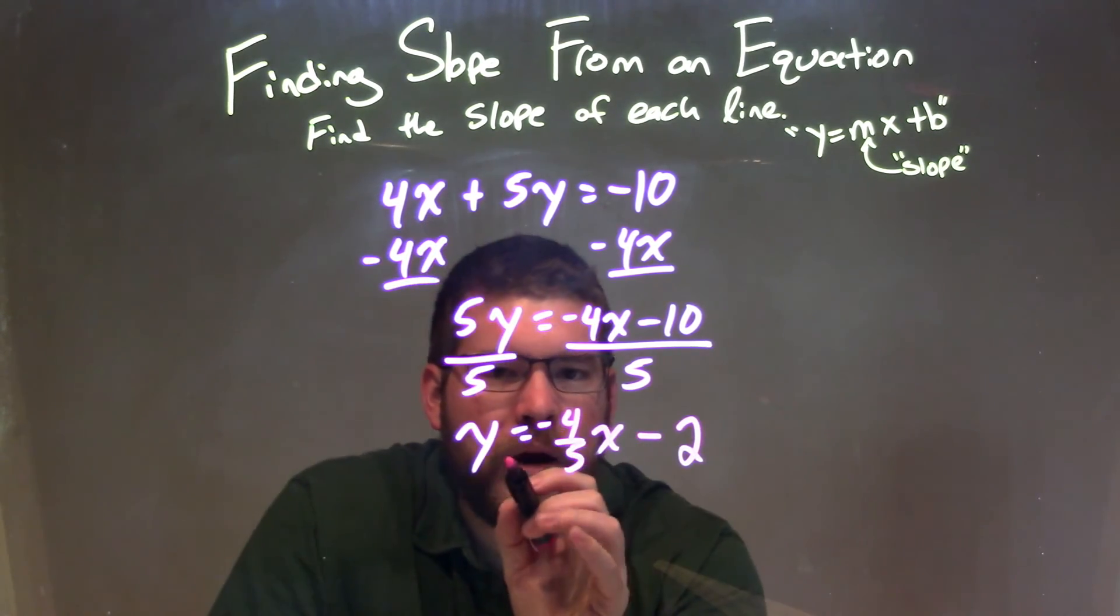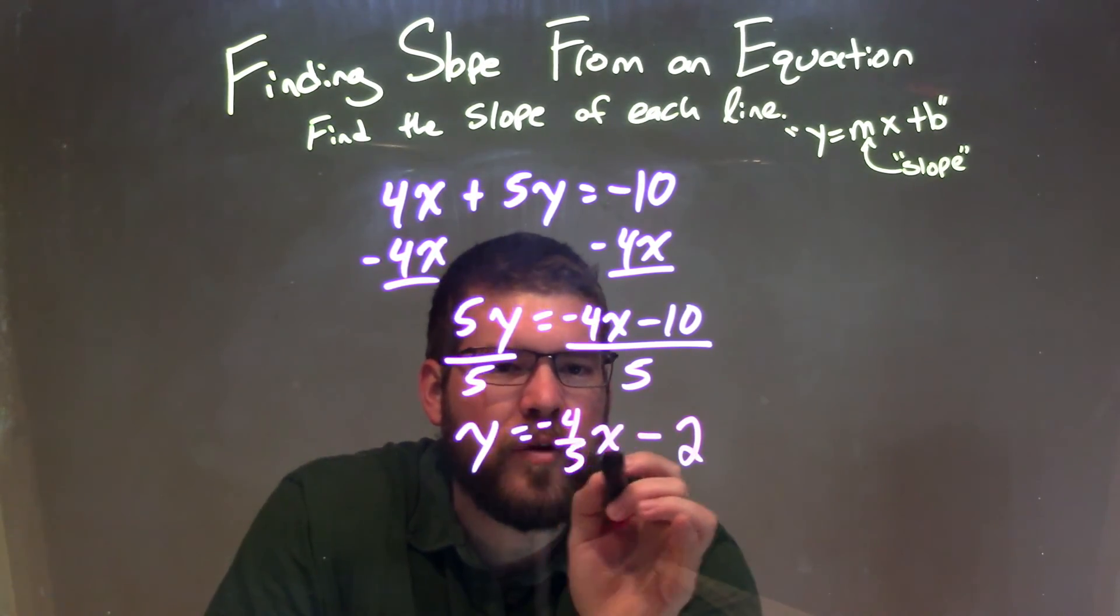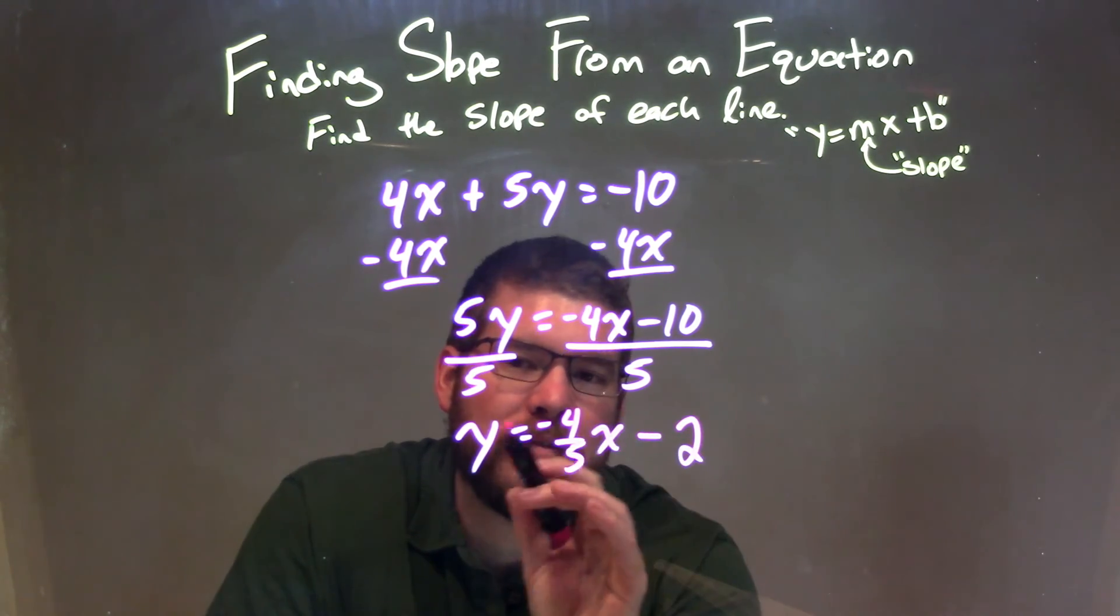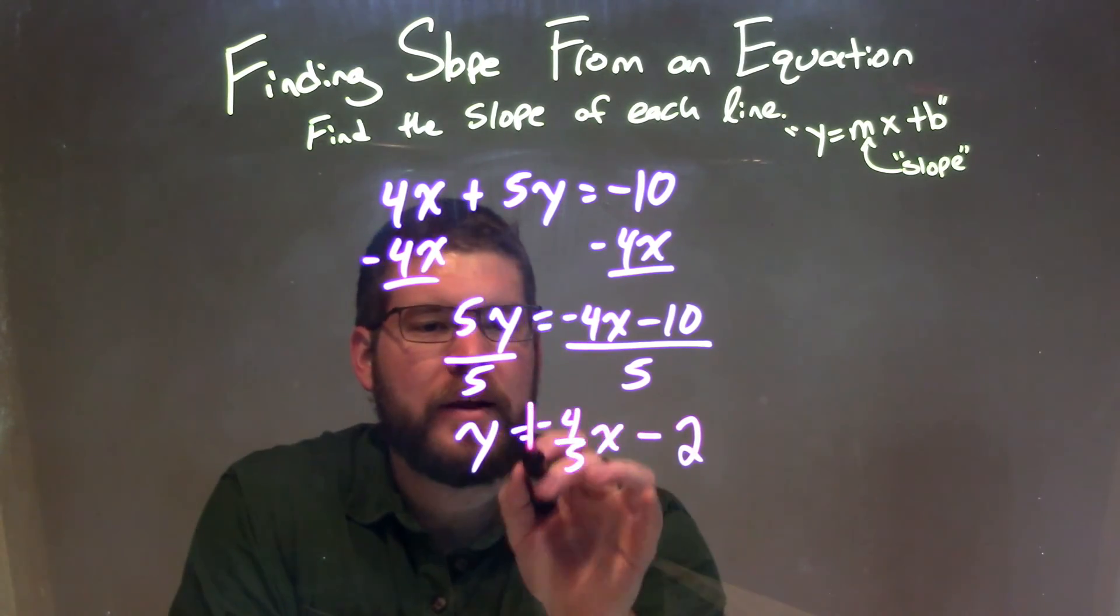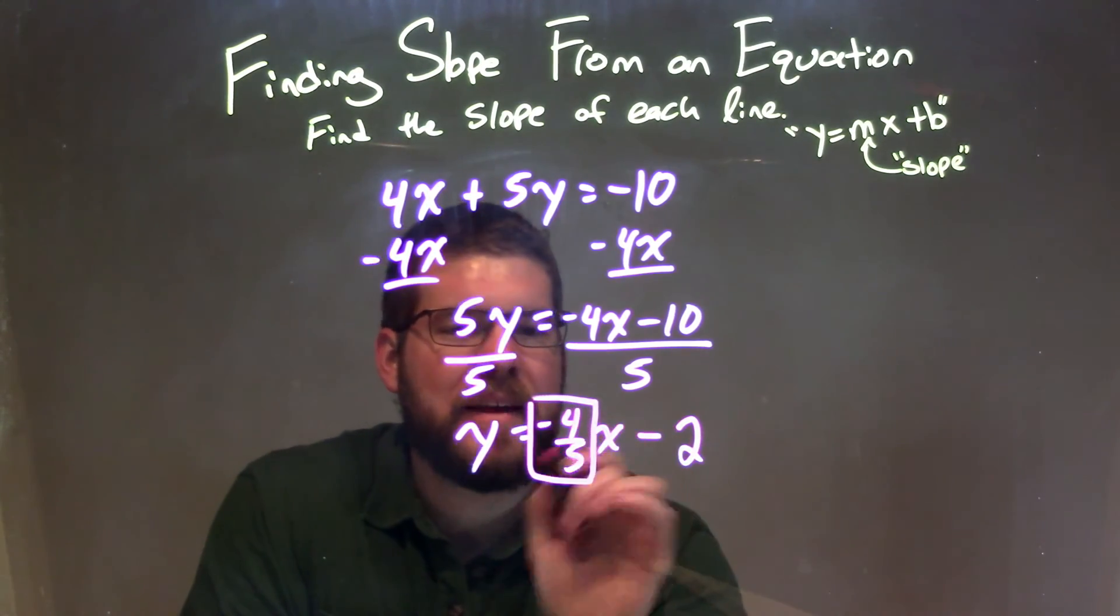So now we have our equation: y equals negative 4 fifths x minus 2. It's in slope intercept form, y equals mx plus b. So now we've got to look, what is the m value? And that's negative 4 fifths.